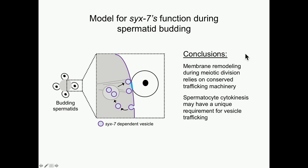In conclusion, membrane remodeling during meiotic division relies on conserved trafficking machinery, including the T-snare 6-7, which promotes cytokinesis after the nuclear divisions of meiosis II. Additionally, because 6-7 appears to be required by sperm but dispensable elsewhere in the worm, one intriguing idea is that spermatocyte cytokinesis might have a unique requirement for vesicle trafficking — there's interesting data from Drosophila supporting this. However, another simple explanation could be redundancy of syntaxins in other cell types in C. elegans. I want to keep thinking about this as I continue the project.